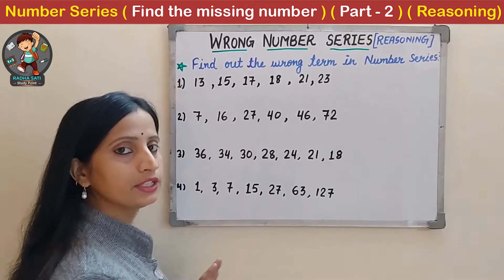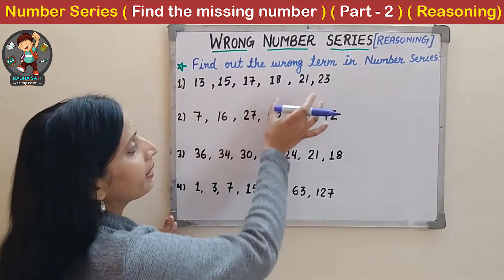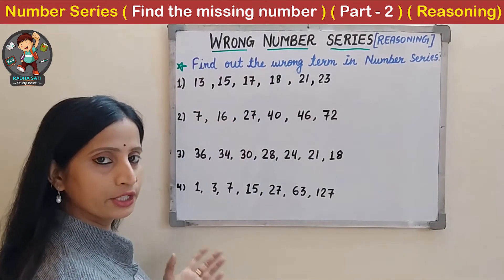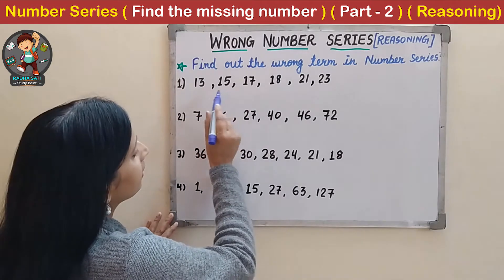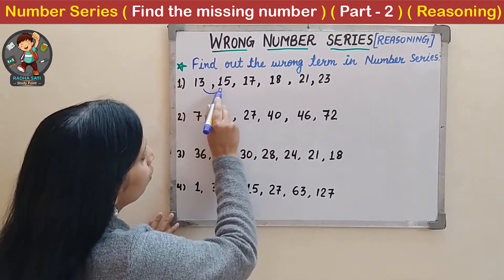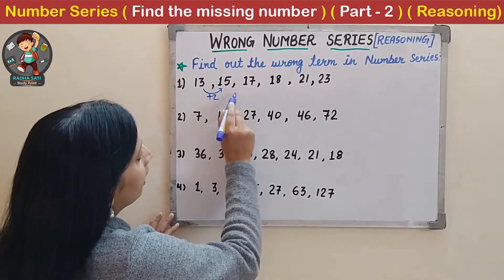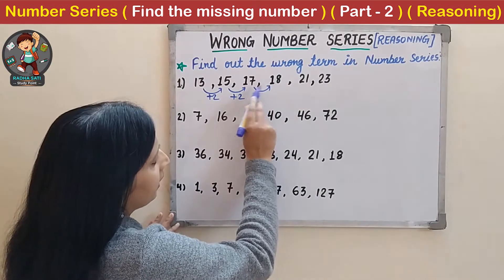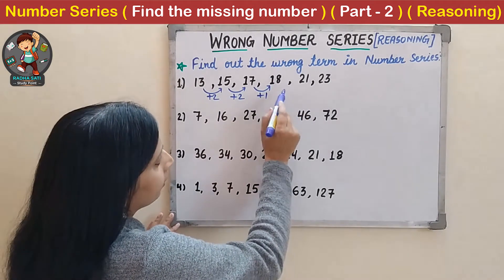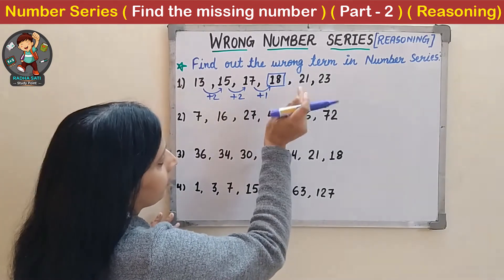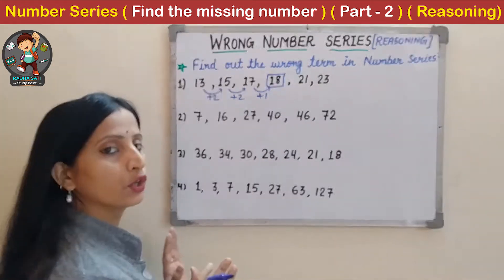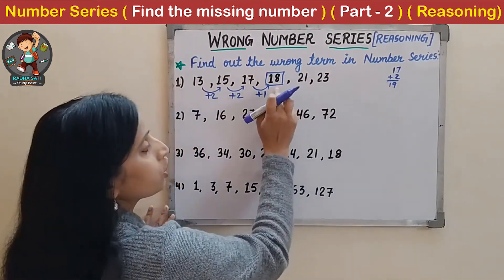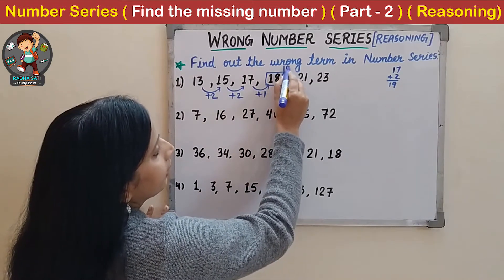While looking at this number series you will understand that it is an addition-based number series, because every time the numbers are increasing. So let us see by how much the numbers are increasing. 13 plus 2 gives 15. Again 15 plus 2 gives 17. But here 17 plus 1 only gives 18. So this means that this number is wrong. If we add 2 to 17 we get 19, so instead of 18 this number should be 19.